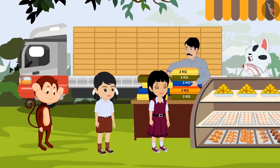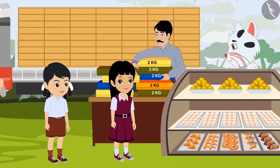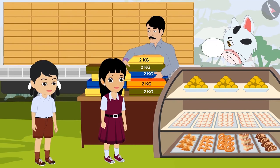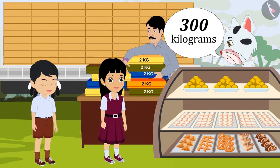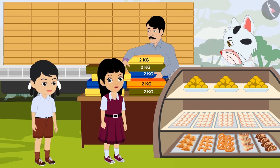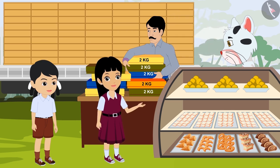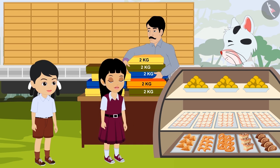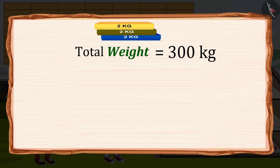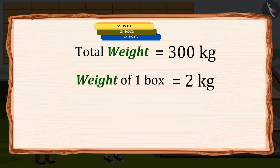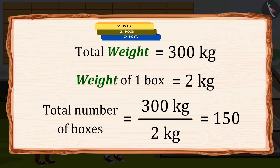Oh see, there are new sweets at Deepa Cat's shop. Deepa, how many sweets would these be? These are 300kg of sweets, but one box contains only 2kg of sweets. Then how many boxes of sweets did you order? The total weight of the boxes is 300kg and the weight of one box is 2kg. We will divide the total weight, 300kg, by the weight of one box, 2kg, to find how many boxes are needed.